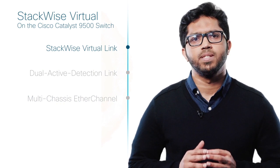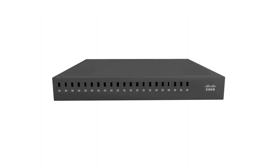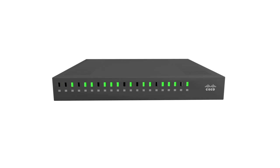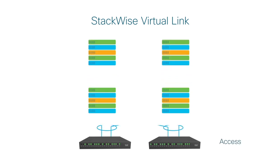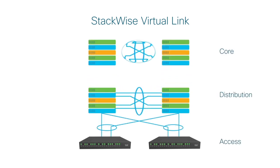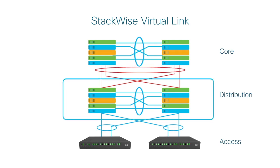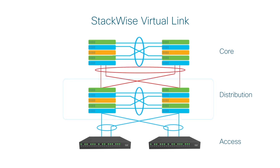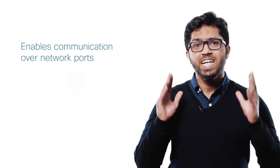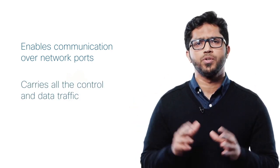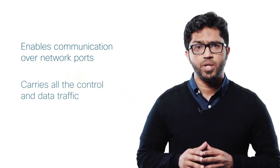The first actor is the StackWise Virtual link, or SVL. When the switch is powered up and the hardware is initialized, it looks for a configured SVL before the control plane is initialized. That's because the SVL plays the role of a connector between the two switches. It connects two switches in a StackWise Virtual domain over regular Ethernet, enables network ports to virtualize the system, and carries all control and data traffic between these switching units.